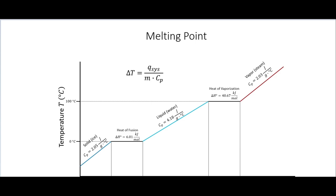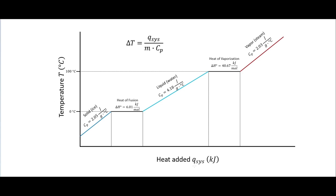Hopefully you remember from general chemistry our heating curve, where we have heat added on the x-axis and temperature on the y-axis. This is for water. At the solid phase we are putting heat in and the temperature is steadily going up. The slope of that curve depends on the amount of substance and the specific heat. For solid water (ice), the specific heat is 2.05 joules per gram·°C.